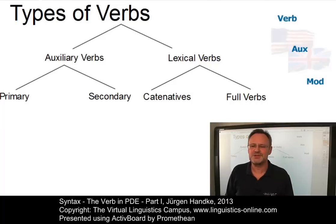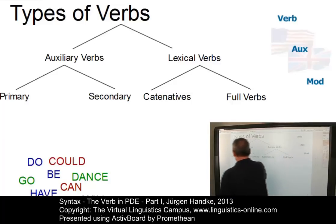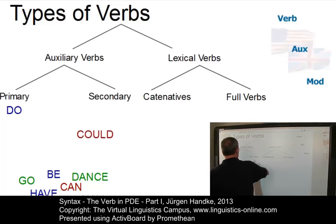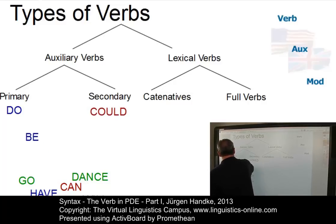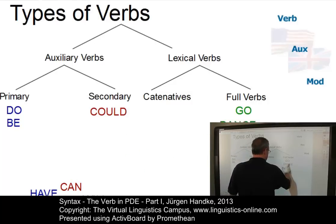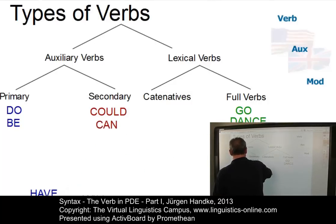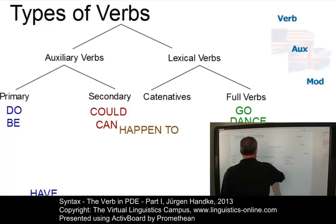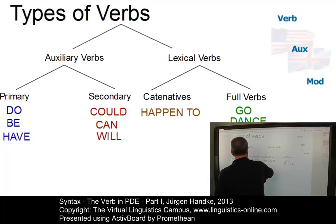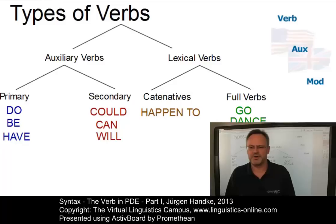Let us first of all associate some examples with these four types of verbs. For example, 'do' is known as a primary auxiliary verb, 'could' is a secondary auxiliary verb, 'be' is another primary auxiliary verb, 'go' is of course a full verb — a lexical verb. 'Dance' is such a verb, then 'happen to' is what some people call a catenative verb, 'have' is a primary auxiliary verb, and 'will' is another secondary auxiliary verb.